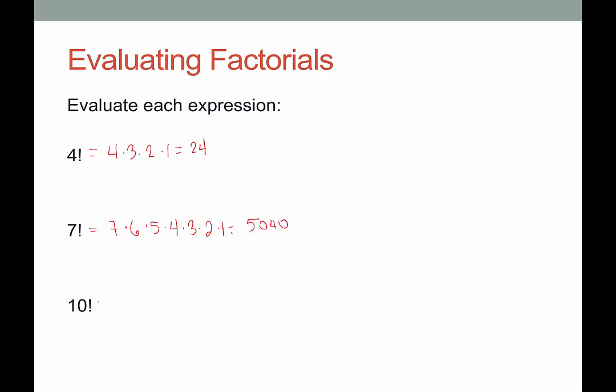And 10 factorial would be 10 times nine times eight times seven times six times five times four times three times two times one, which would be 3,628,800.